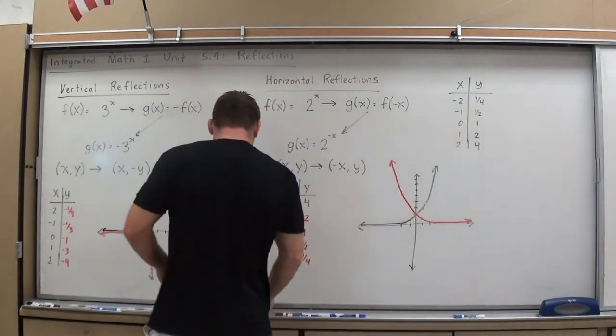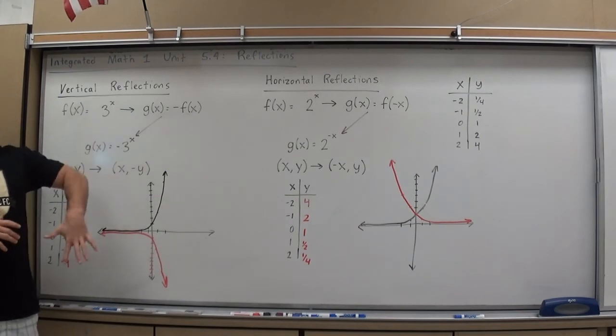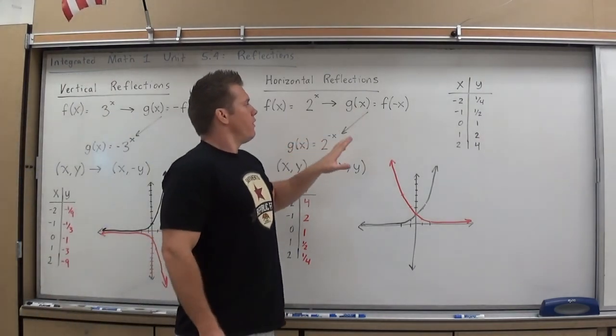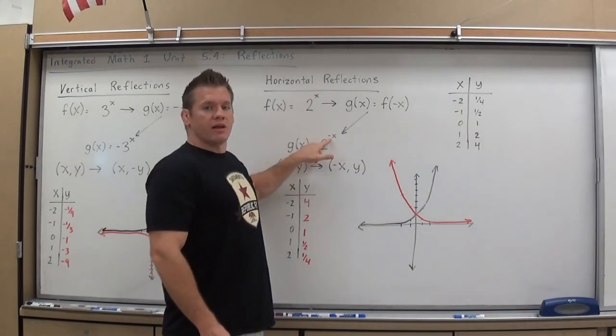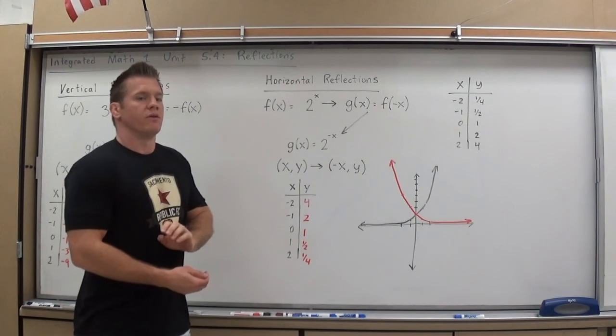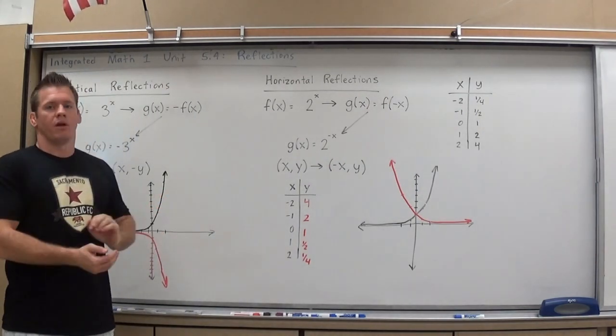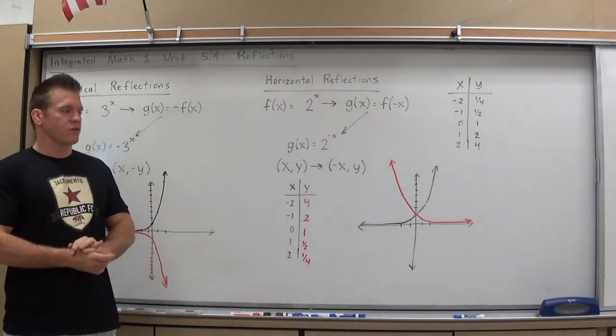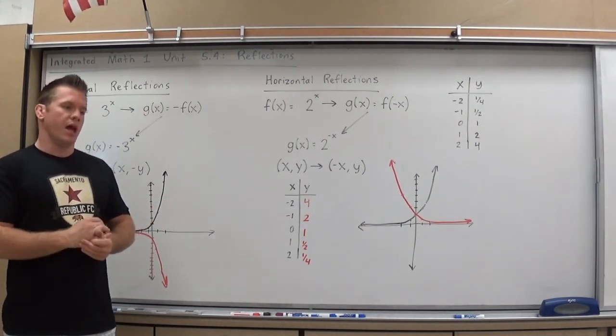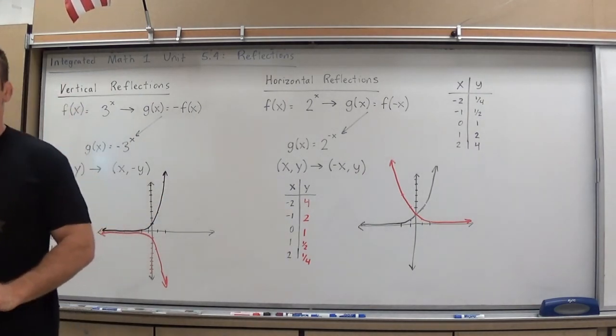So to summarize, throw a negative out in front of the main part of the function, it will do a vertical reflection, move it up or down reflection-wise. If you change the x itself, the input variable, to a negative, it will reflect it horizontally. As far as helping you for graphing, it just gives you an idea of what it should look like. You can still always depend on the table to check and make sure your graph is correct. But by knowing reflections, you have a better idea of where it's going to be. And later on, in future math classes, you can do quick graphs using it. All right, thank you. We'll see you next time.